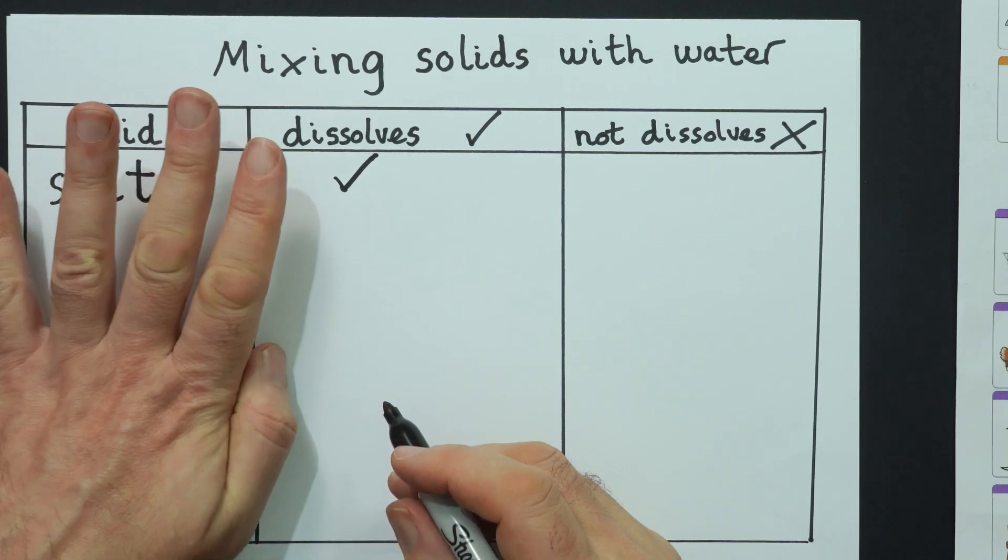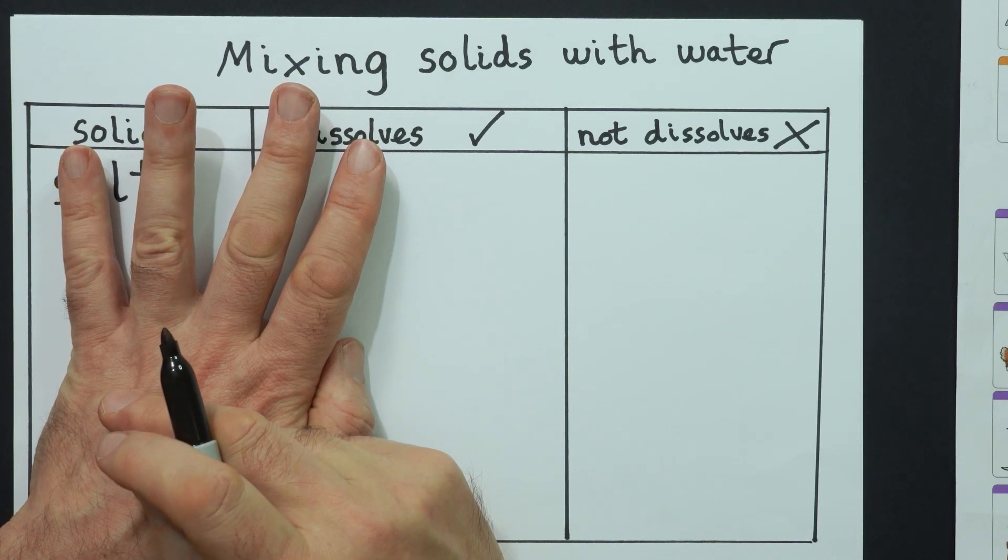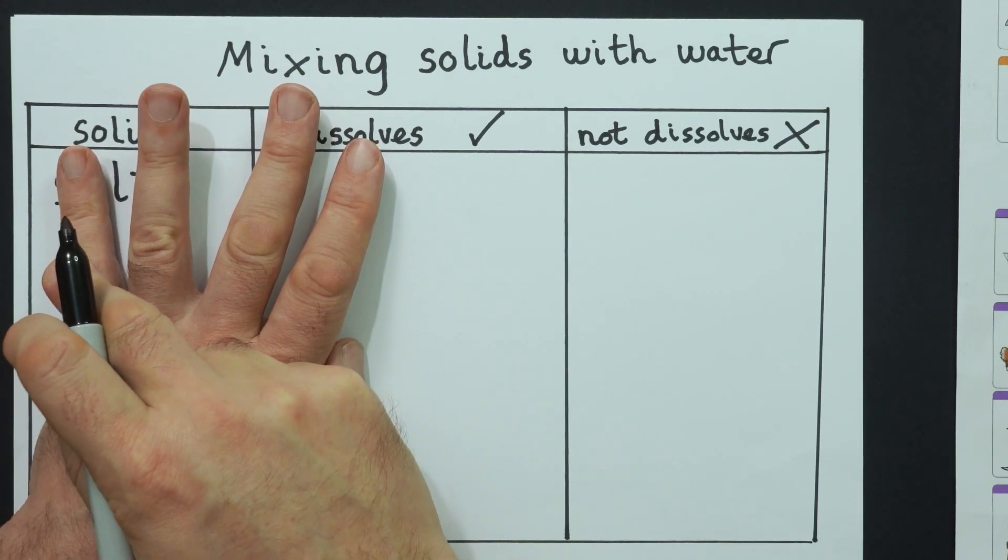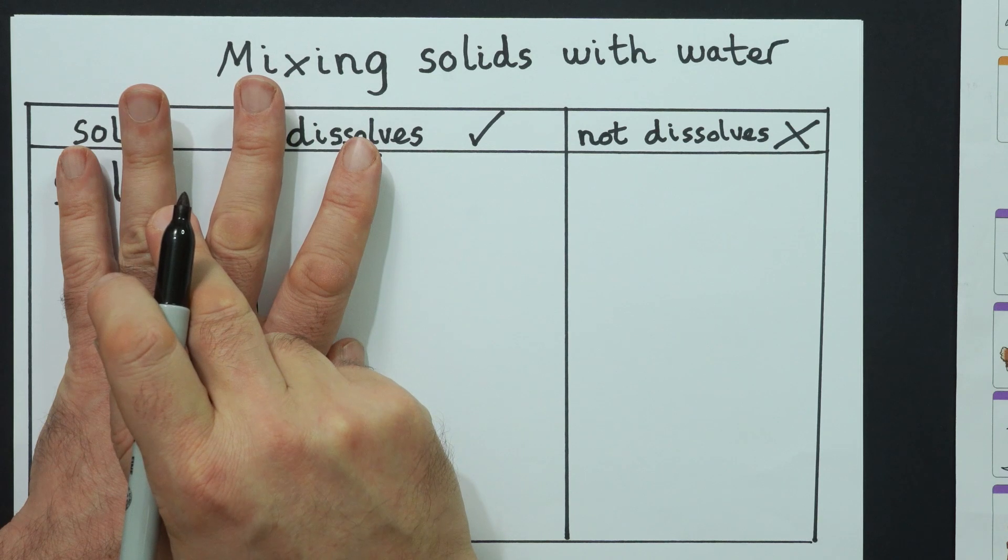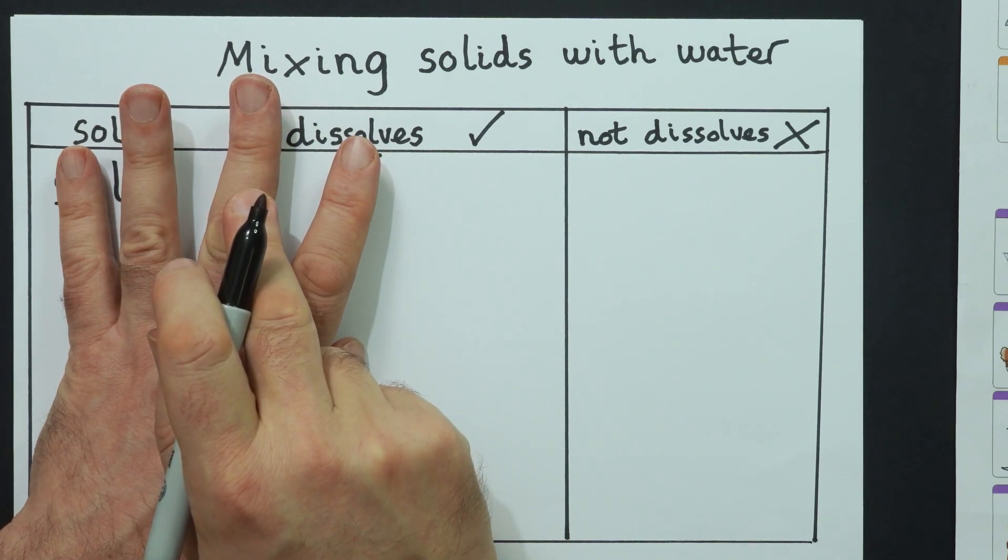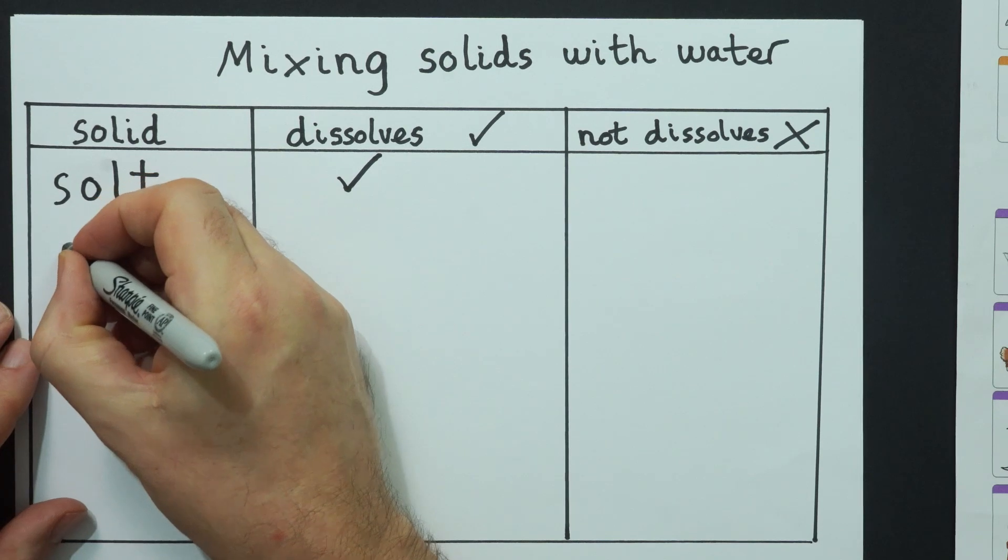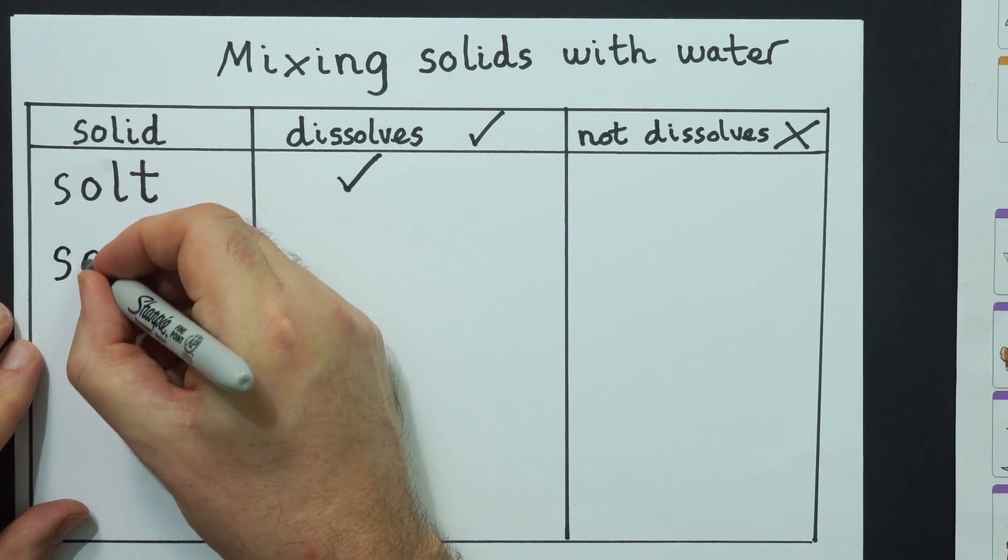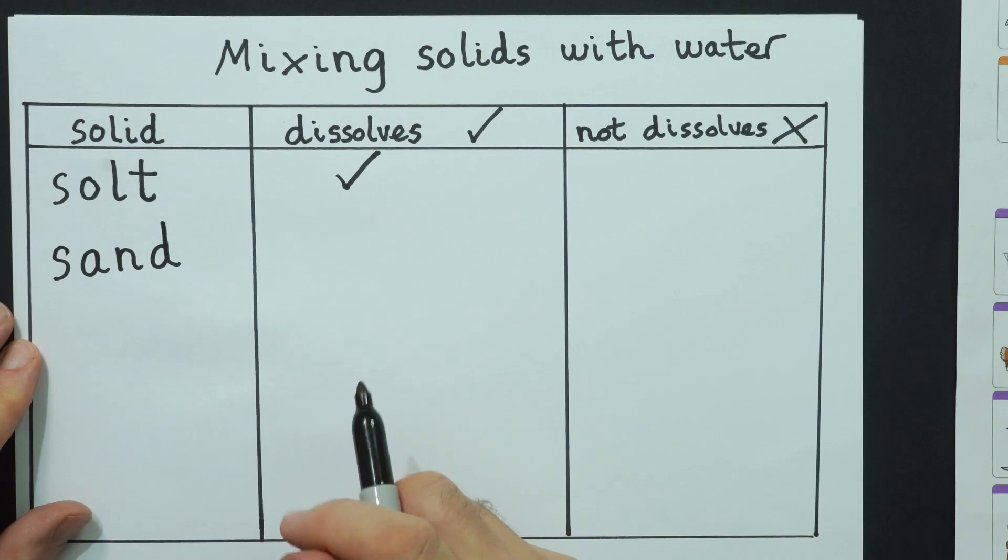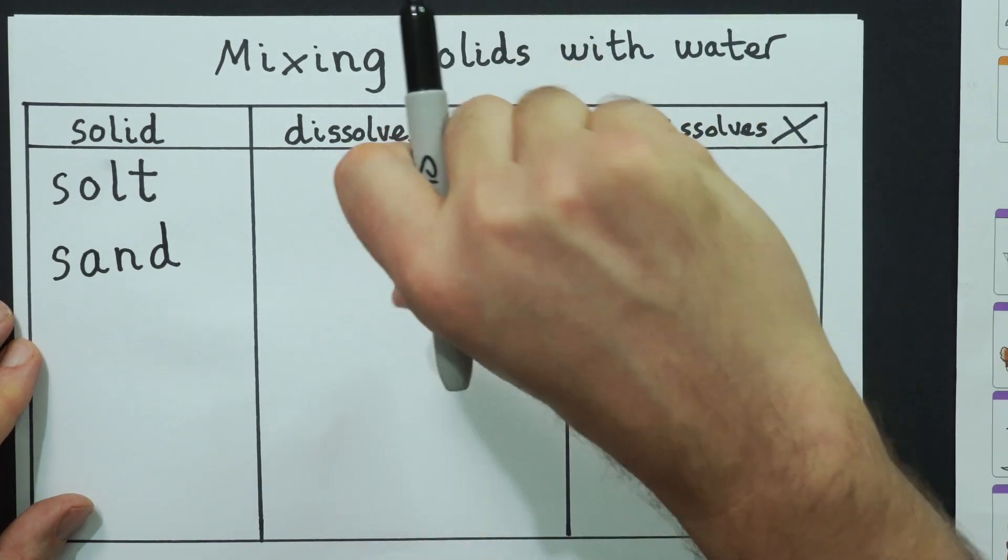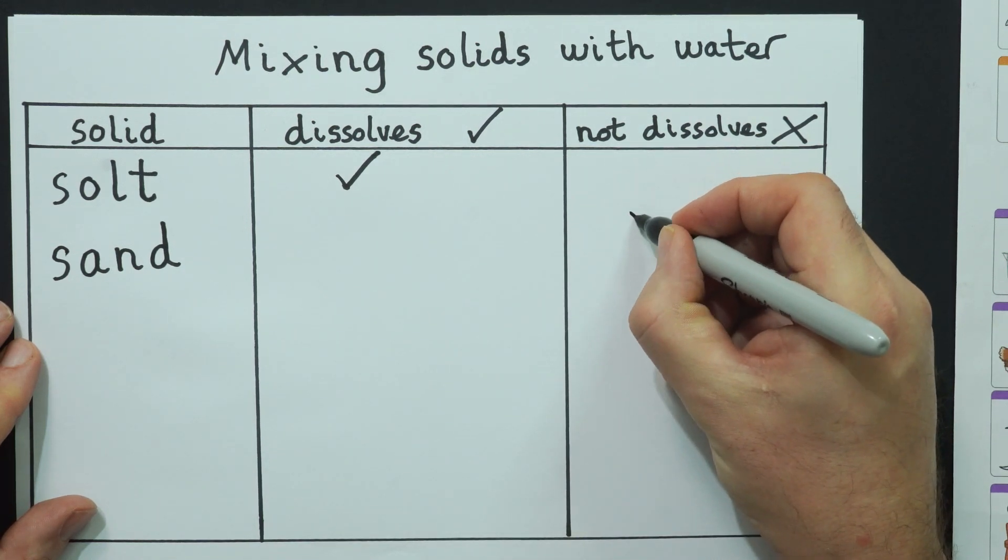Next one was sand. Show me four spread fingers again. What's the first sound in sand? S-A-N-D. I'm going to write that down. S, A, N, D. Then I check it, sand, good. Right. Dissolve or not dissolve? Clearly did not dissolve. You could still see the sand there.